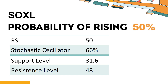The current stochastic oscillator of SOXL is 66%. When the stochastic oscillator stays between 50 and 80, it may indicate that the stock is experiencing a mild downtrend with some selling pressure. In this case, an oversold signal could indicate that a stock is reaching a potential buying opportunity.